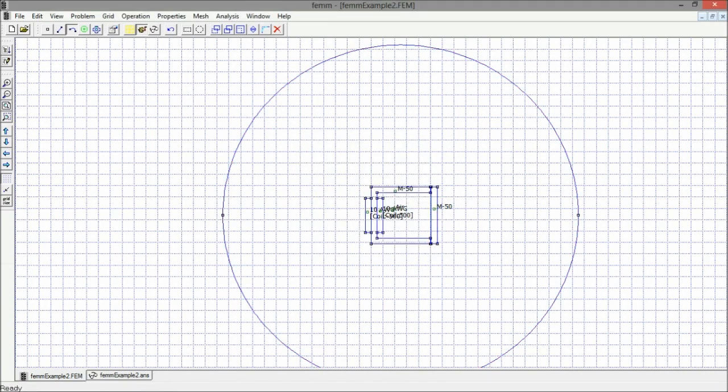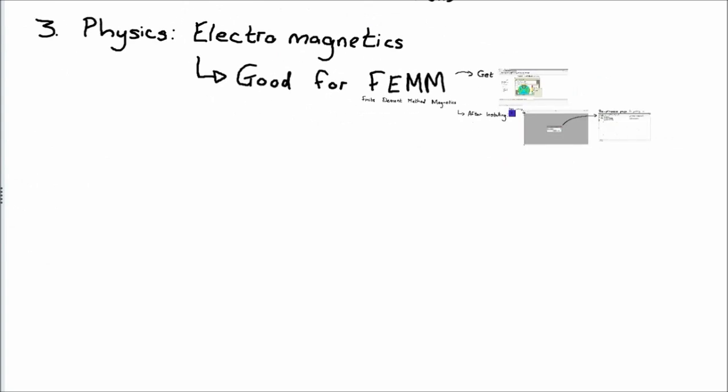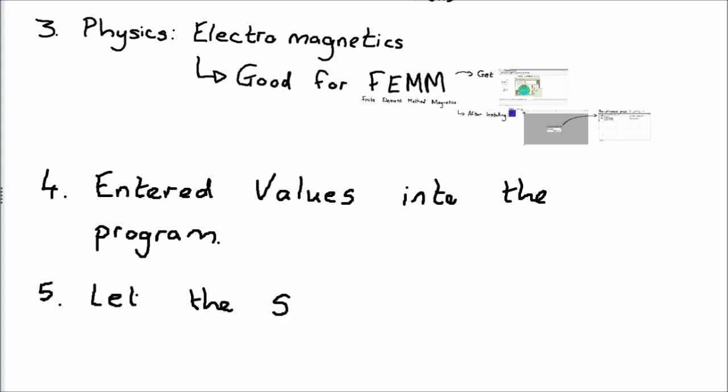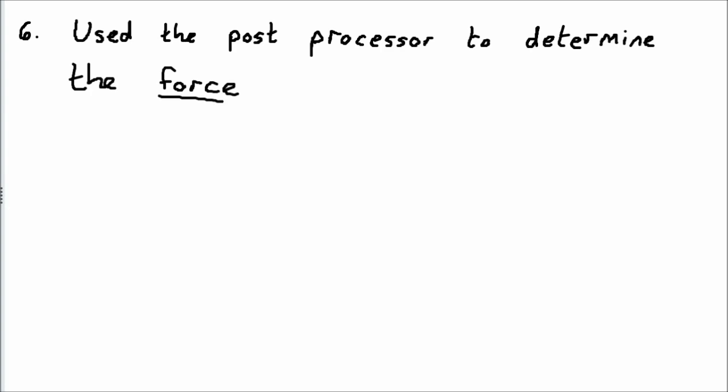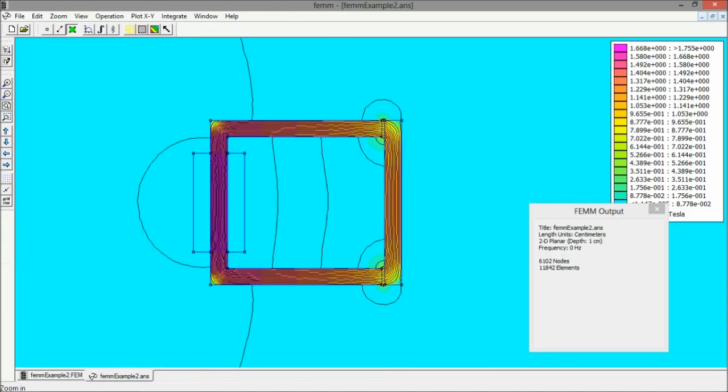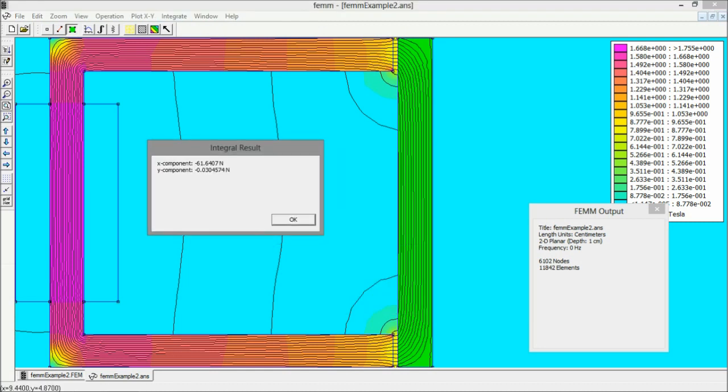After the solver has completed its operation, we switch to the post processor and can find the results we are interested in. In the case of this example, let's say we are interested in the force that will be exerted on the rectangular block. After selecting the block and integrating for the appropriate quantity, the result will be displayed.